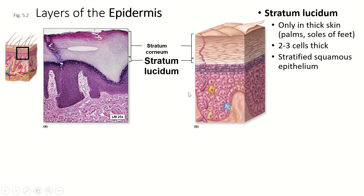The next layer is not found in all skin. It's called the stratum lucidum — lucid means light. The stratum lucidum is this very thin white layer right here. It's usually only two to three cells thick, and it is found only in thick skin, such as on the palms of the hands and the soles of the feet. It's a couple layers of stratified squamous epithelium — the granulosum is stratified squamous as well. These cells are full of keratin and serve as an extra layer between the granulosum and the top layer, the stratum corneum.